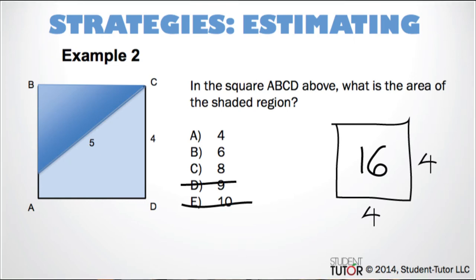10 is more than half. 9 is more than half. 8 is exactly half. And this is a little less, so all of those get crossed off too. That leaves us 4 and 6. And 4 would be exactly a quarter of the square. And this looks a little bigger than that. So we know the answer is 6.